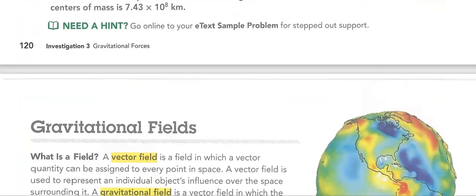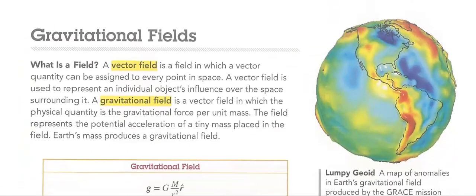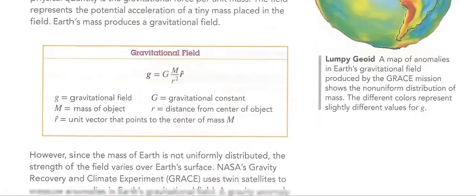We'll talk about gravitational field. What is a field? What is gravitational field? We'll take the equation g equals capital G, which is the gravitational constant, multiplied by capital M, which is the mass of the object, over r squared, which is the distance from the center of the object. r-hat is the unit vector that points to the center of the mass.